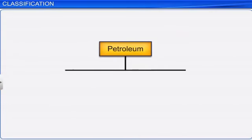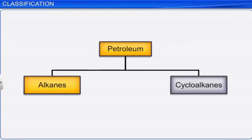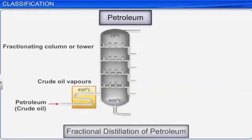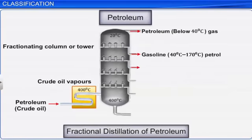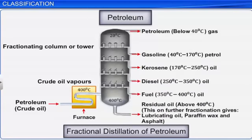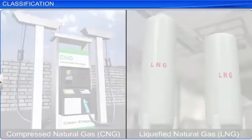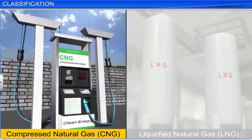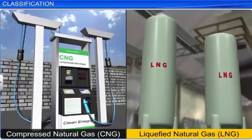Petroleum, on the other hand, is a major source of alkanes and cycloalkanes. When it is subjected to fractional distillation, the various fractions obtained are used as fuels for different purposes. For example, natural gas in the form of CNG (compressed natural gas) and LNG (liquefied natural gas) are used as automobile fuels.